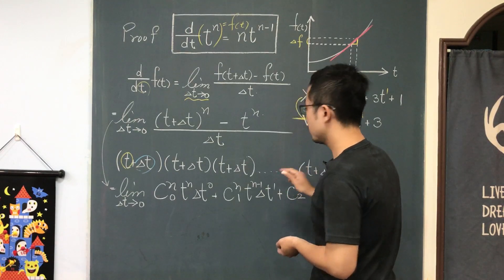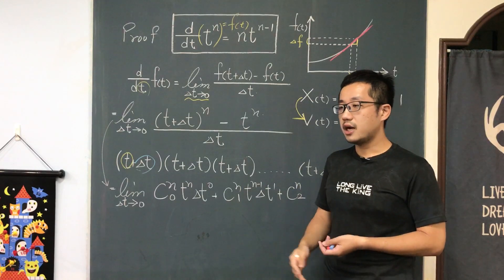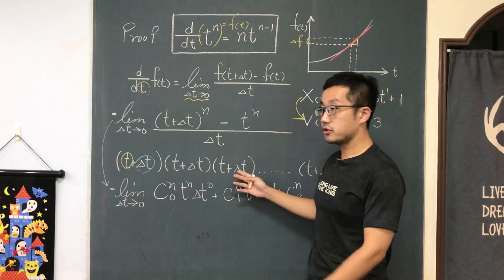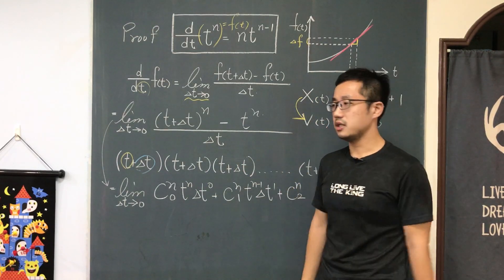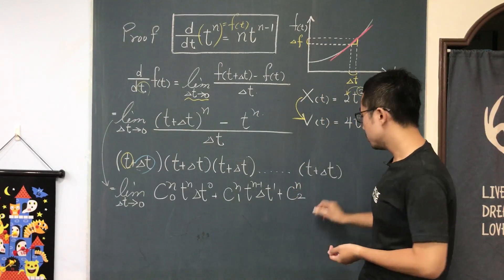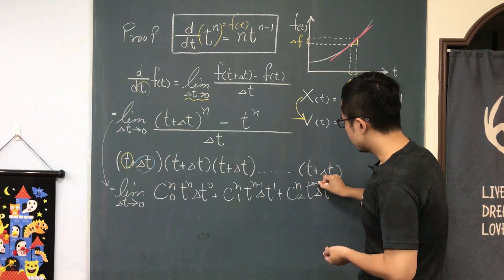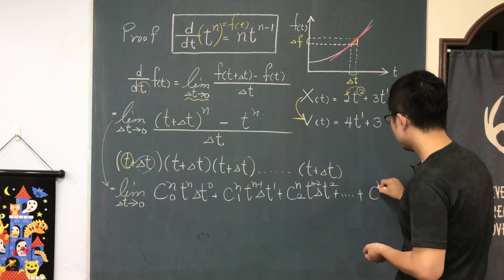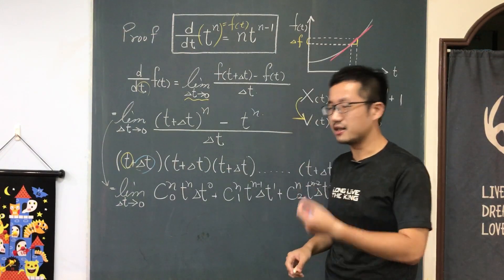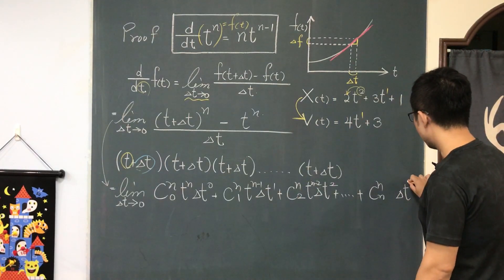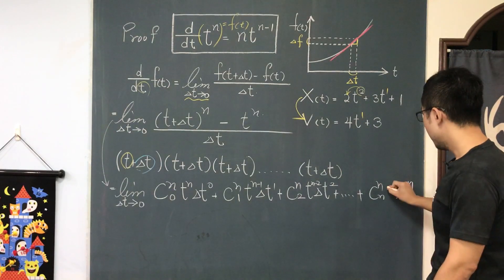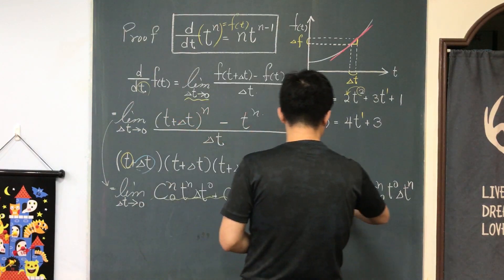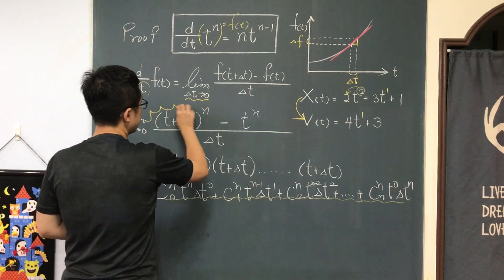Plus n choose 2: I choose 2 delta t's from all the terms. The delta t could come from the first and third, or second and last, and so on — I have many options. The number of options is n choose 2, giving delta t squared times t to the n minus 2. This continues up until n choose n, where I choose n delta t's, giving delta t to the nth power times t to the zero power. All these terms together equal (t + Δt) to the nth power.